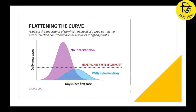This is how we can flatten the curve. We can identify cases early and isolate cases before they spread further. When we are in the hospital, we don't want the health system over-exhausted. We don't have the capacity to provide more care during an outbreak, epidemic, or pandemic situation. Our main target is to avoid exhausting our health system.